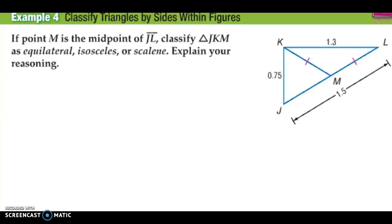Now, in example four, we're going to classify triangles by sides within some figures. If point M is the midpoint of JL, here's point M. It means that J and L are the same length. Classify triangle J, K, M. So we're looking at triangle J, K, M.